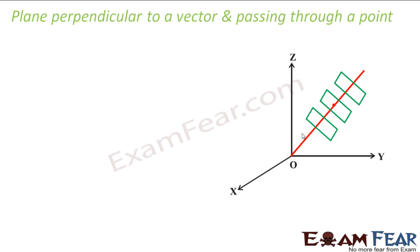So it says that if there is a line and my plane is perpendicular to this line, there can be n number of planes perpendicular to this line. One more thing to specify: I have to say that this passes through some point also.